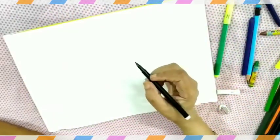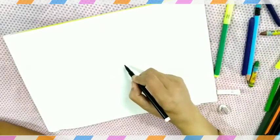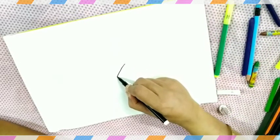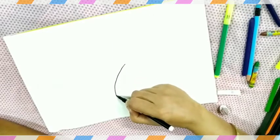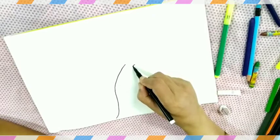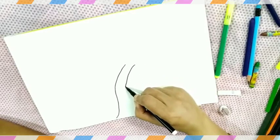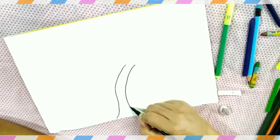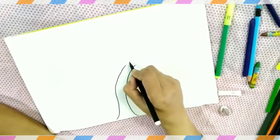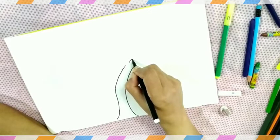To draw the coconut tree, at first I will draw a curved line like this. Like this. And here we will draw a line like this. And here we will draw a small line.